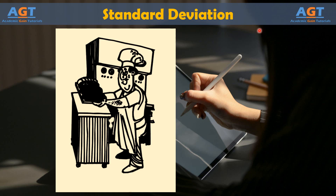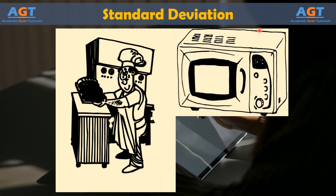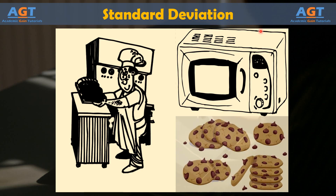When consistency is lost, defects are introduced. If the oven doesn't maintain an exact temperature all the time, the cookies might burn. If the cook puts in a cup of sugar instead of a cup and a half, the cookies might not be sweet enough. Variation makes for inconsistent quality.